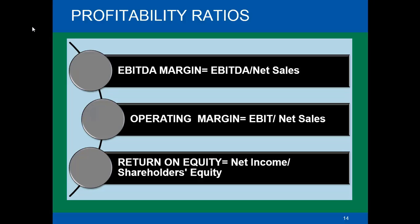EBITDA enables you to compare one business with another without the effects of capital structure or funding structures. A company may use either debt or equity, so the capital and funding structures are not affected. Even tax environments differ — tax rates may differ from one country to another — but if you're comparing two companies in the same industry, you can compare on the basis of EBITDA margin. It is also calculated before charging any depreciation, as companies may charge depreciation based on various methods, eliminating the depreciation impact on profitability.